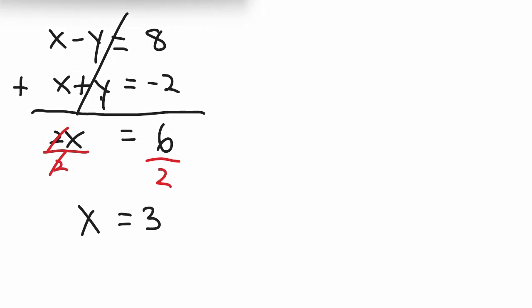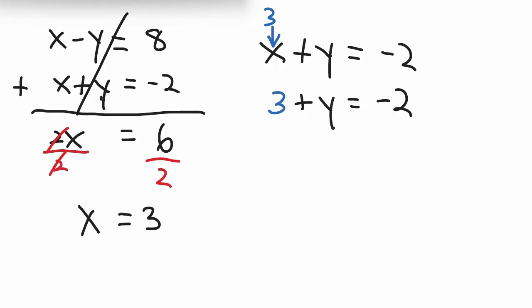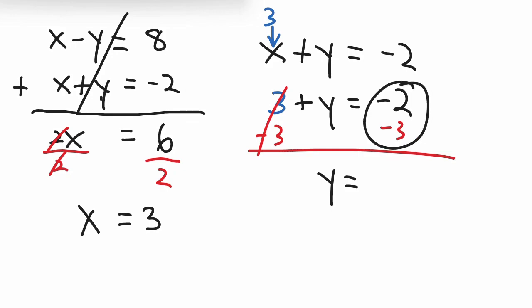Now we need to find out what y is. Just use one of the two equations that you start with. I'm going to use the second equation: x plus y equals negative 2. We just found x to be 3, so we plug in 3 for x. 3 plus y equals negative 2. Subtract 3 from both sides — the 3s cancel and we get y equals negative 2 minus 3, which is negative 5.